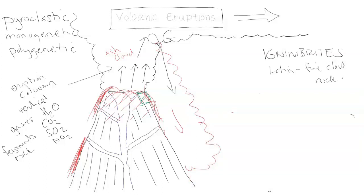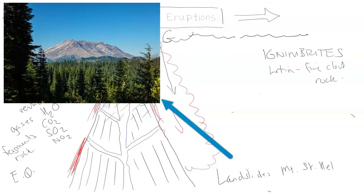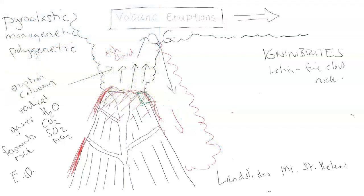You also get earthquakes — both magmatic, both shallow and deep. Magma moves and moves the rocks, causing earthquakes. Earthquakes can cause landslides, like famously at Mount St. Helens in 1980, which was the largest recorded landslide ever, causing the lateral blast on the north side of the volcano caused by the bulge. The landslide was triggered by the earthquake.